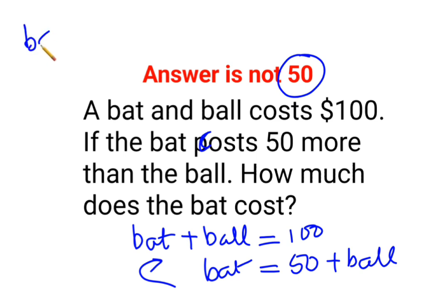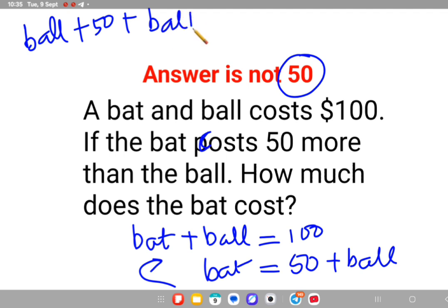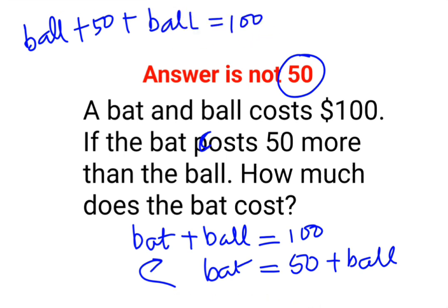Ball plus 50 plus ball equals 100. So we will have 2 times ball equals 100 minus 50. So I will have 2 times ball equals 50. The value of one ball when...